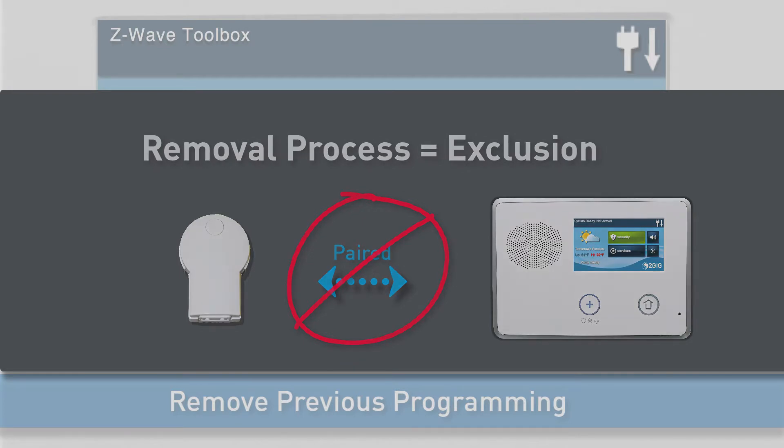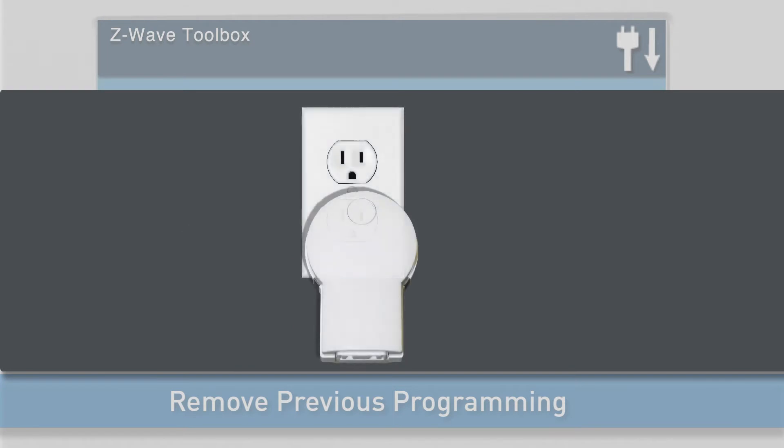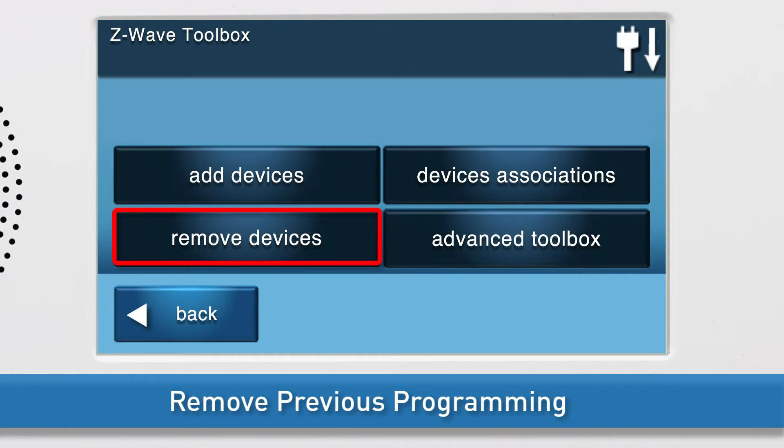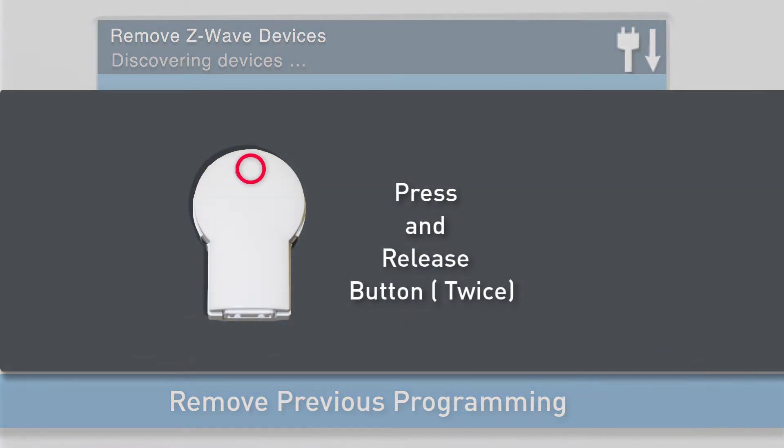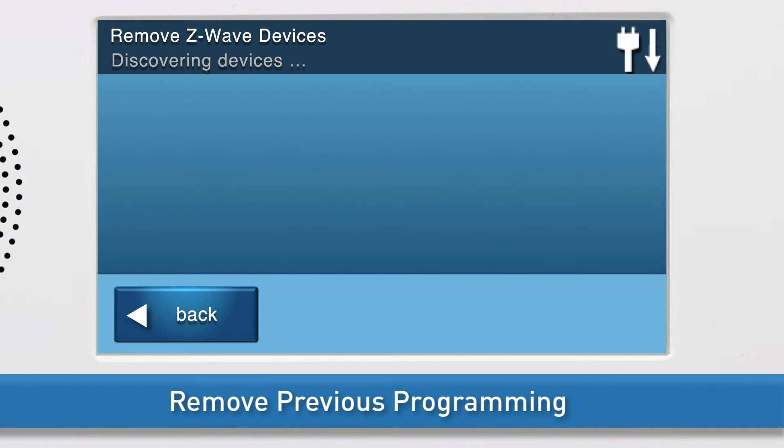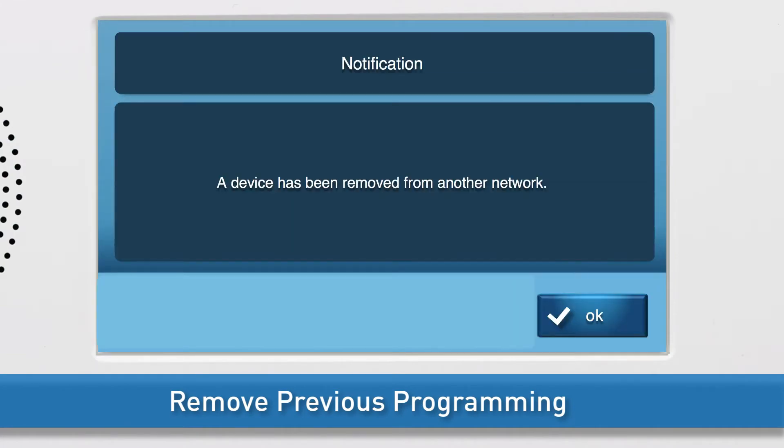To begin the removal process, first connect the Lamp Module to the nearest AC outlet. Select the Remove Devices button. The Remove Z-Wave Devices screen will appear. Press and release the button on the front of the Lamp Module twice. You will see a notification on screen that the device was removed.